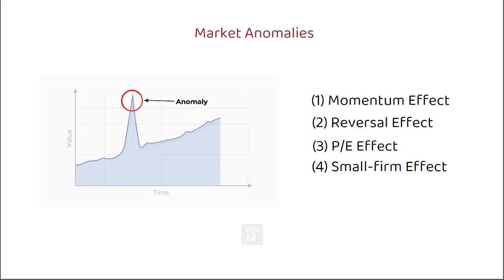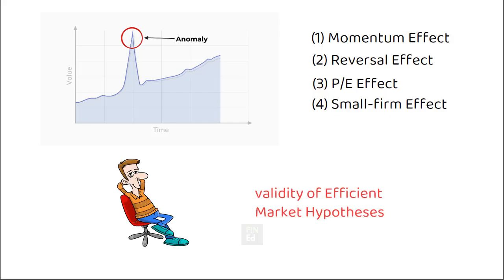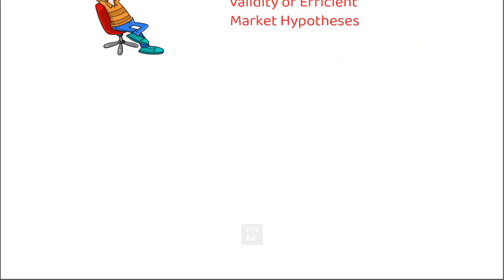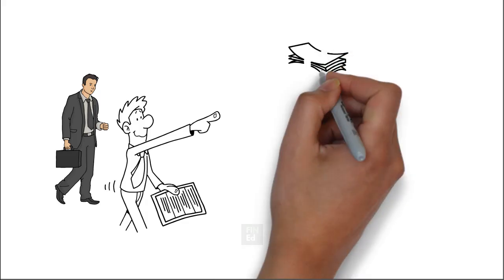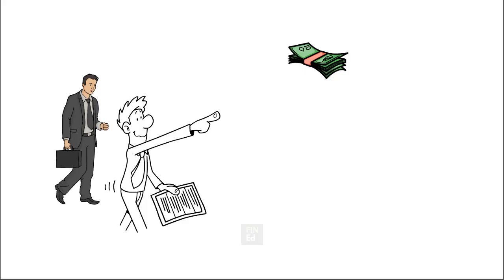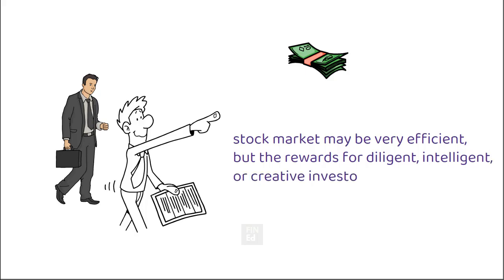There are many other anomalies not discussed here, but you can explore those if interested. All these anomalies point to questions about the validity of the efficient market hypothesis. There is a telling joke about two economists walking down the street who spot a $20 bill on the sidewalk. One starts to pick it up, but the other says leave it — his argument being that if the bill were real, someone would have picked it up already. A strong belief in the efficient market hypothesis can paralyze investors and make it appear that no research effort can be justified, but this extreme view is unwarranted. There are enough anomalies in the empirical literature to justify the search for underpriced securities. Therefore, it would be wise to say that the stock market may be very efficient, but the rewards of diligent, intelligent, or creative investors are still there.